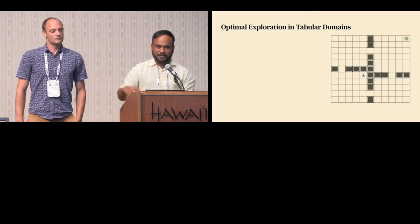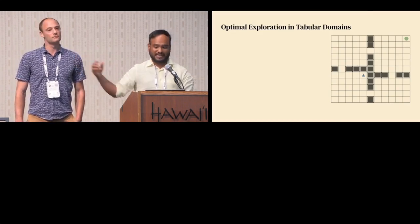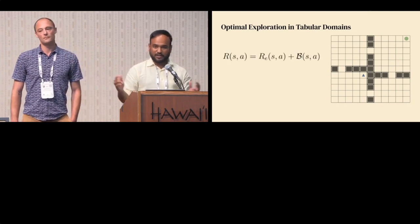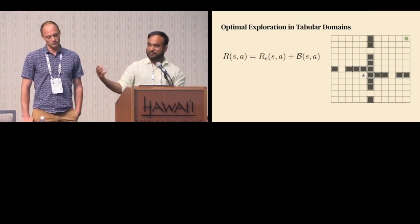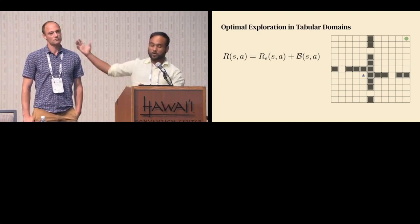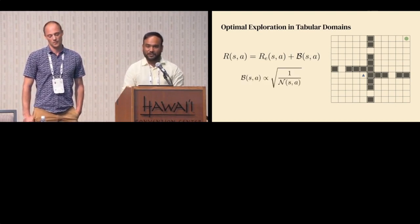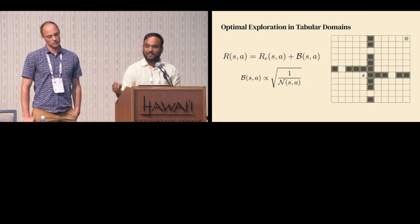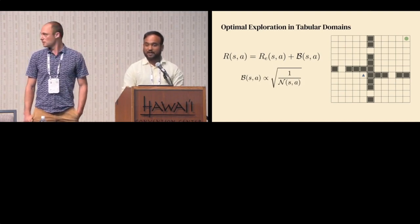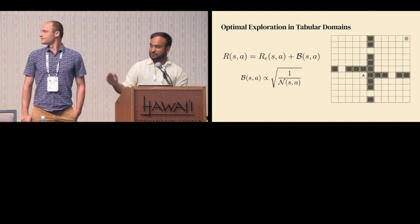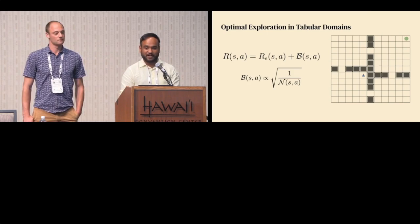How to do this kind of exploration is pretty well understood when the environment is small and tabular. What that involves is you take the rewards from the environment and augment them with a bonus term. Decades of really beautiful theoretical work tells us exactly what that bonus should look like — it should fall off as a function of the square root of 1 over n, where n is the number of times you've tried a state-action pair.